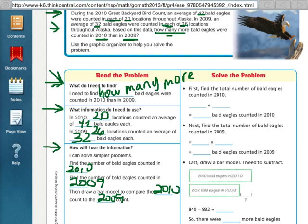So, first find the total number of bald eagles counted in 2010. I will do that by doing 42 times 20. I can do my basic fact of 42 times 2. That's 84. And then add my 0. So, 840 bald eagles were counted in 2010.